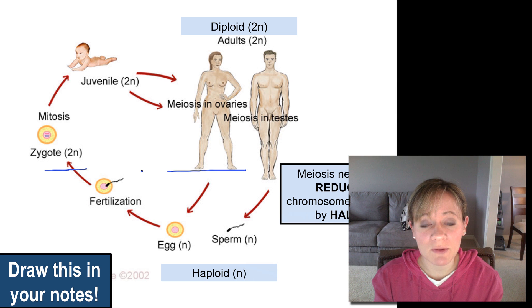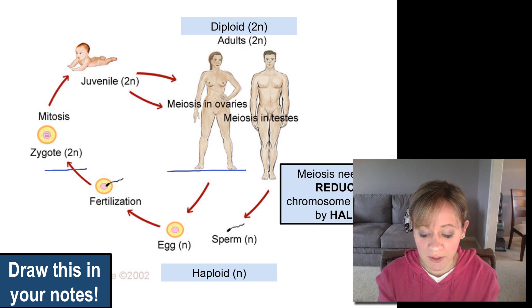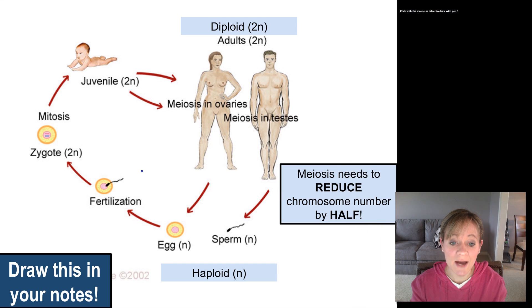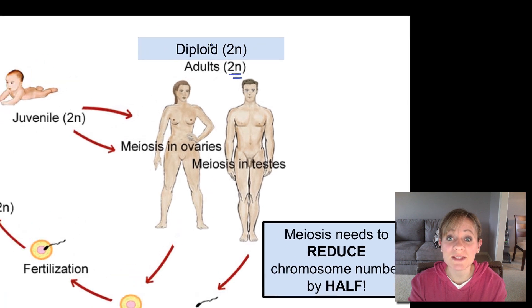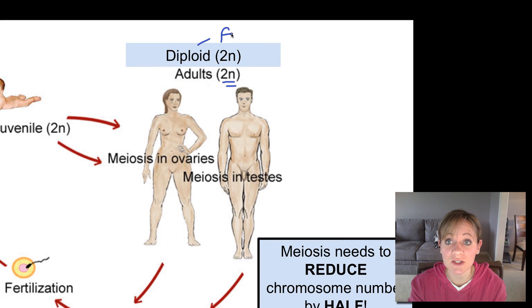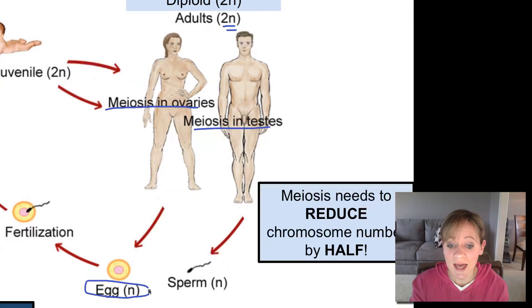This is a diagram of the human life cycle. I'd like for you to draw this exactly in your notes and label all the new vocabulary and write down the definitions as we go. We're going to start up here with adults. This little 2N simply means that adults are diploid, which means they have a full set of DNA. Meiosis is going to occur in the sex organs — the ovaries and the testes — and it's going to create the egg and the sperm.